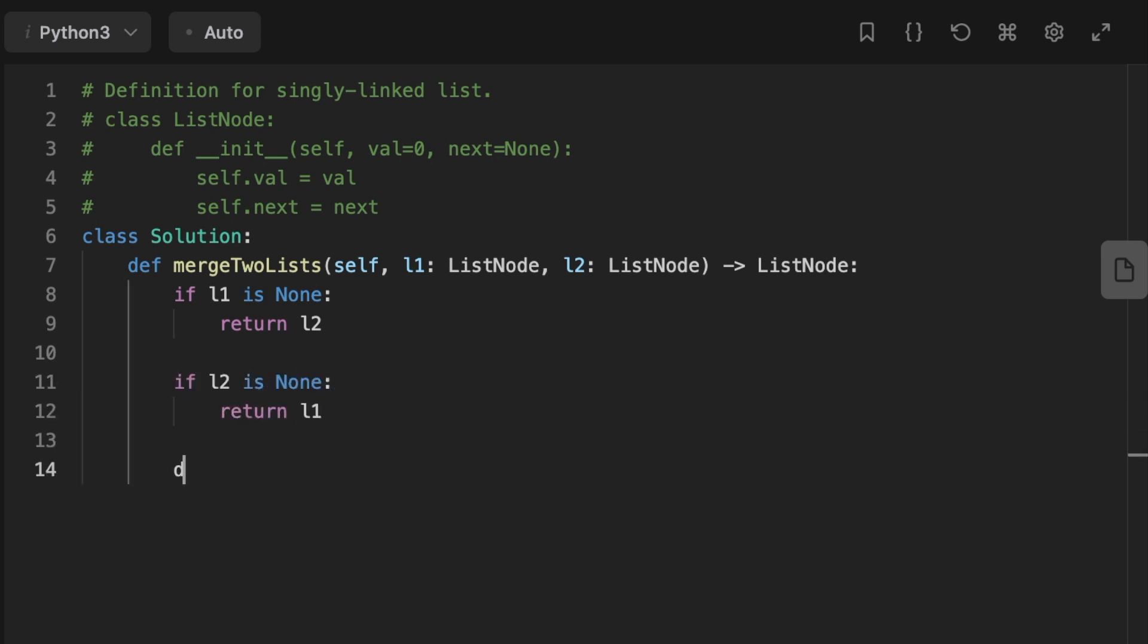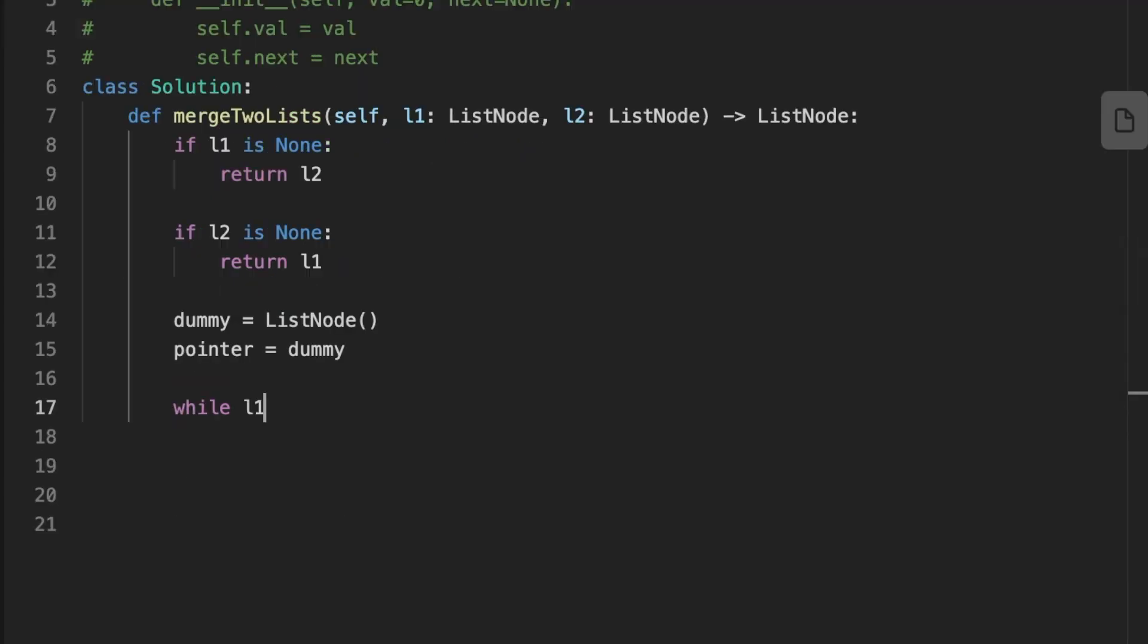So let's jump to the code solution. First, let's set a condition if one or both lists are empty. Then we initialize a dummy node and pointer. Then start iterating through both lists until one of them is empty, and add the smaller of the two current nodes to the merged list.